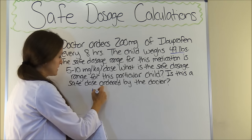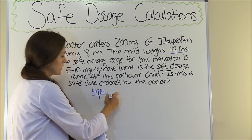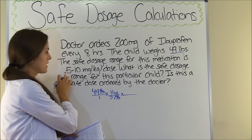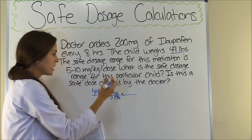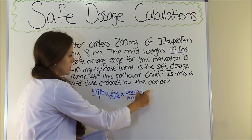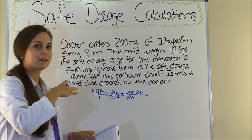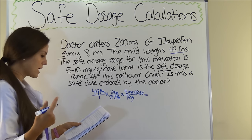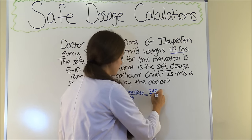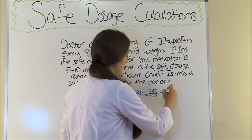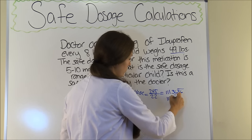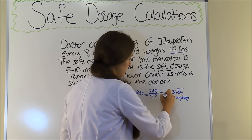Let's solve the minimum dose first. Converting weight: 49 pounds, with 2.2 pounds in one kilogram. For the minimum dose we use 5 milligrams per kilogram per dose. So 1 kilogram equals 5 milligrams per dose. We're in milligrams per dose — exactly where we need to be. Multiplying: 49 × 1 × 5 = 245, and 1 × 2.2 × 1 = 2.2. Then 245 ÷ 2.2 = 111.4 milligrams per dose. That's our minimum.